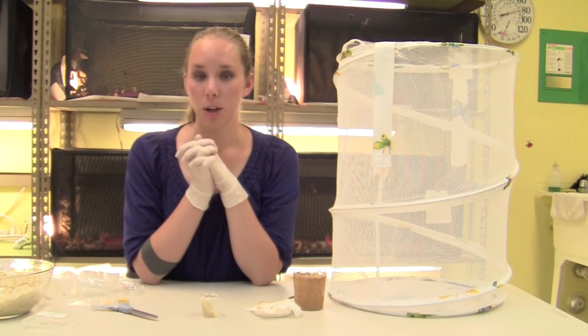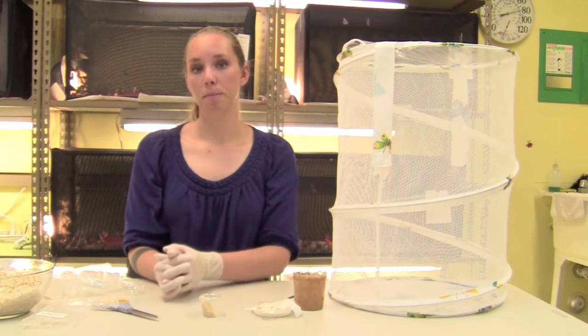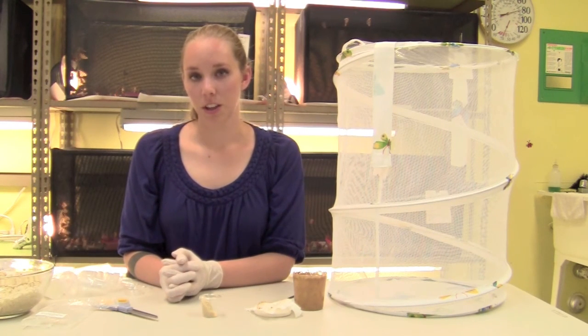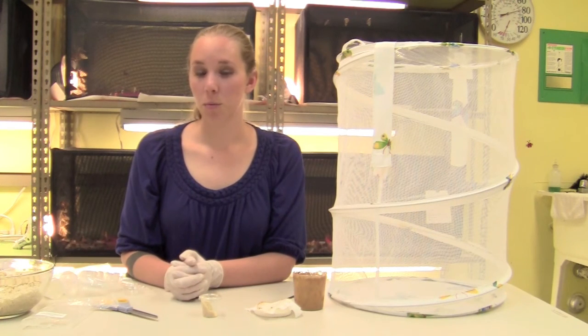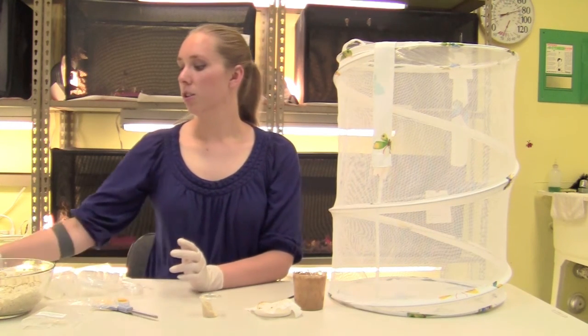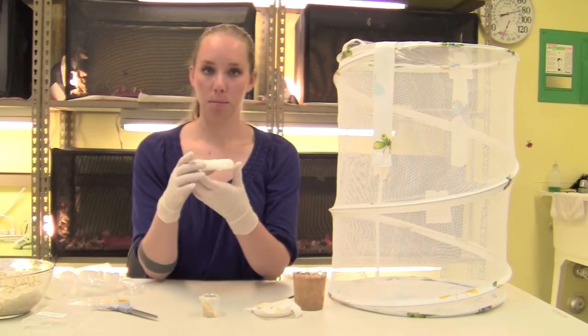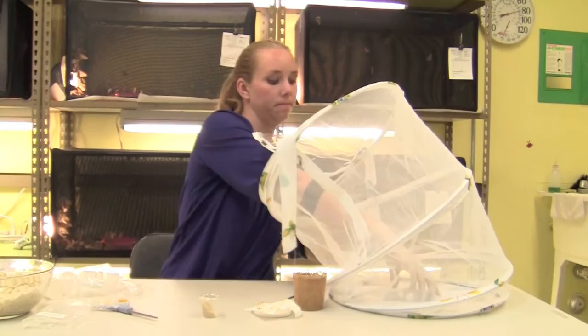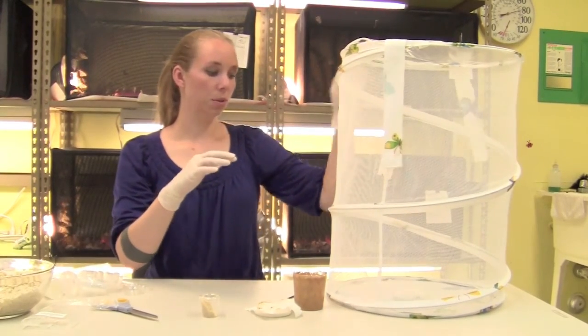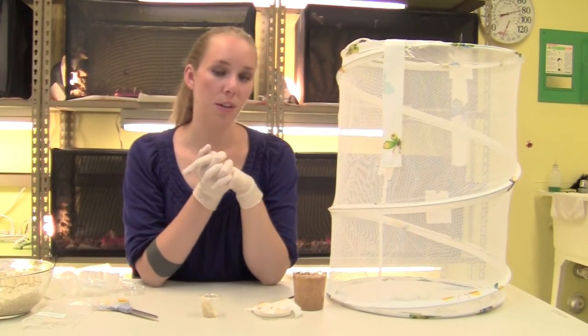After all your butterflies have emerged, you can provide a food source for them by making a sugar-water mixture. To make this mixture, you can mix five tablespoons of sugar with one cup of water. You can then put this solution on some cotton balls in a shallow plastic dish and put it in the bottom of your cage. You'll want to replace the sugar water every few days.